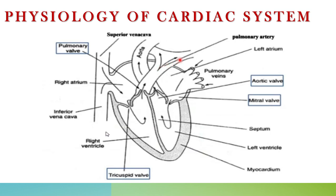Blood flows from the right ventricle through the pulmonary valve to the pulmonary artery, and then to the lungs. The fourth valve is the aortic valve, which is located in the left ventricle. The major function of the aortic valve is to help the left ventricle pump blood from the left ventricle to the aorta.